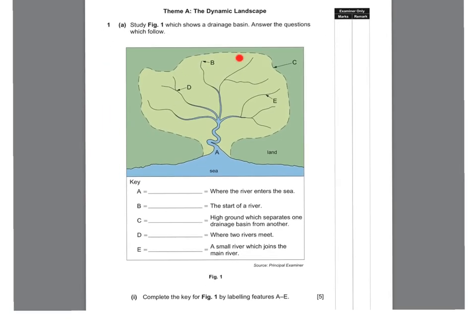You can see here that we have got a diagram really similar to what we have in our notes and what you've seen in the video today. The question is saying here, can you complete the key for figure one by labeling the features A to E? So A is the mouth, B is the source, C is the watershed, D is a confluence because there's two rivers joining together here, and E is a tributary. Really straightforward five marks in the exam.